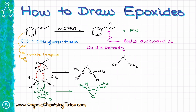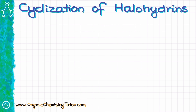Drawing the epoxide on dashes and wedges while zigzagging your molecule is not necessarily incorrect, but it is awkward and can potentially be ambiguous, so be very careful with how you draw those molecules. If it is hard to imagine these molecules in 3D, you might want to play with your molecular model kit and build those molecules. This way you can rotate them in space and see how the two-dimensional drawing corresponds to the actual molecule in three dimensions.